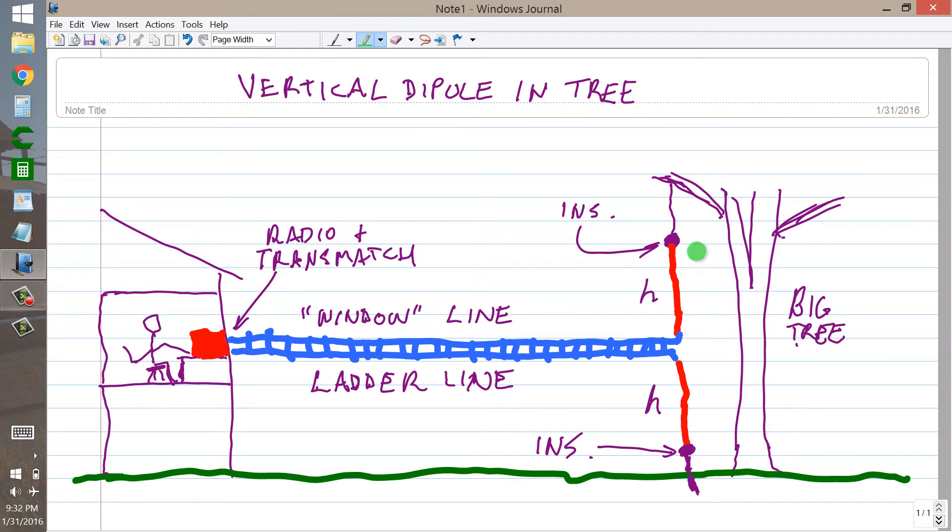The lengths are not important, or the heights are not particularly important, it doesn't have to be resonant on any particular band, but obviously the taller you can make it, the lower the frequencies you'll manage to make this thing work. This here is non-conducting rope or string or wire, if you can use wire, but you need good insulators at either end of the dipole and a good solid anchoring in the ground, so that the thing doesn't pull up out of the ground when the wind blows.